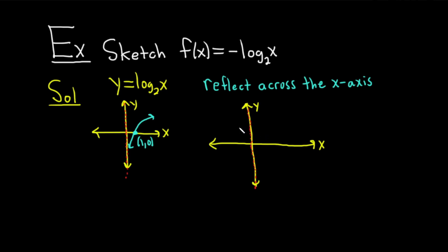And now we have to reflect this across the x-axis. So it's going to look roughly like this. Beautiful. So there we go. And this point here is 1, 0. All right. And that would be the answer. That would be the graph of minus log base 2 of x. So you just reflect it across the x-axis.